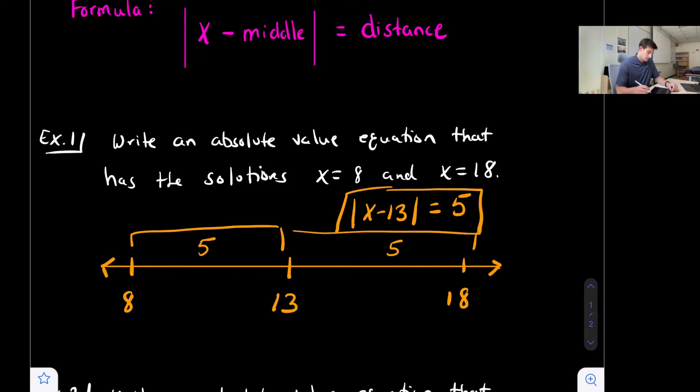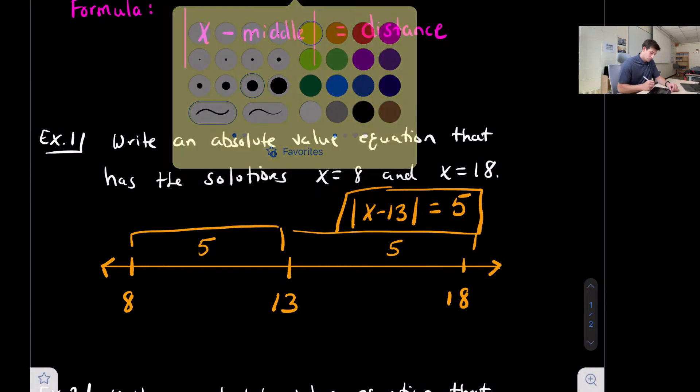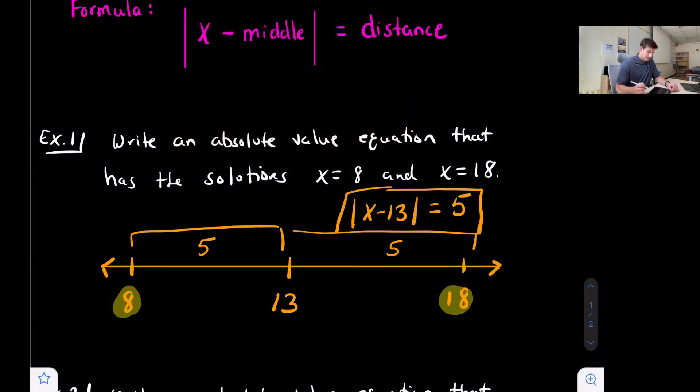We could take our two solutions and plug those in to verify. Our two solutions were 8 and 18, so if we plug 8 in we get absolute value of negative 5 which is positive 5, and when we plug 18 in we get absolute value of 5 which is also 5.